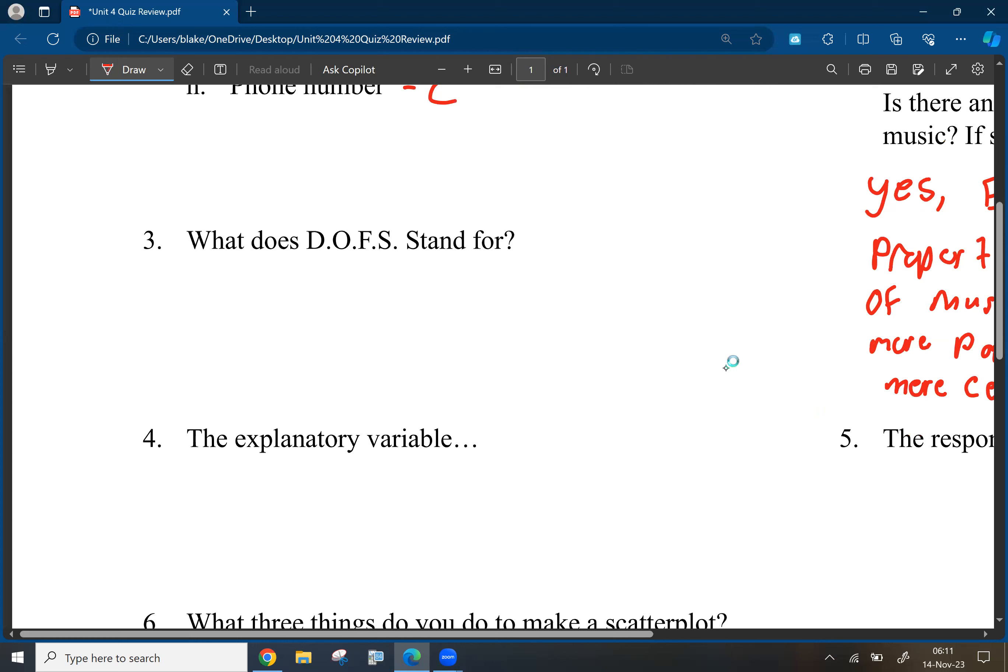Number three, what does DOFS stand for? So that's D for direction, O for outlier, or unusual features, F for form, and S for strength. So remember, this is about describing a scatterplot. So when you describe a scatterplot, if you ever see a scatterplot and you have to describe it, you're going to talk about those four things.